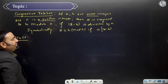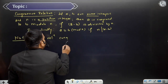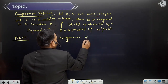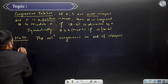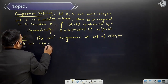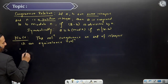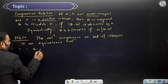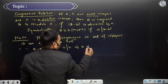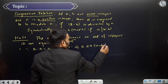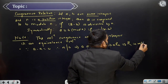So what is the beautiful observation here? The congruence relation on the set of integers is an equivalence relation. Why? Since A minus A equals 0, and any positive integer will divide 0, this implies A is always congruent to itself - meaning A is related to A. That means the relation R is reflexive.